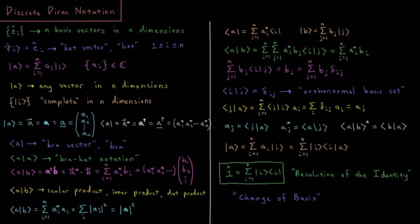What we're going to have is what we call a ket vector. We write a vertical bar, then some index, then a greater-than symbol. That represents a ket, and for some basis vector there are going to be n of those, with i going from 1 up to n. We can represent our column vector a as a ket: ket a equals a sum from i equals 1 to n of coefficient a sub i times basis ket vector i.